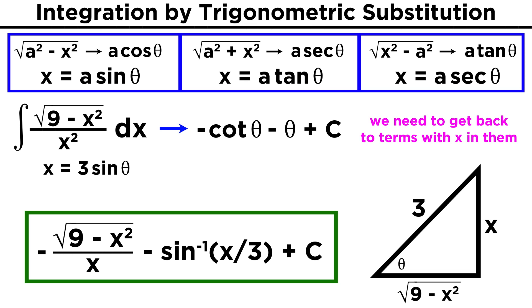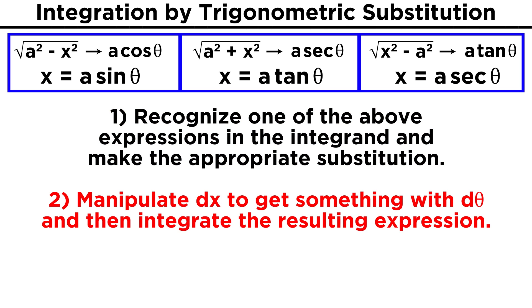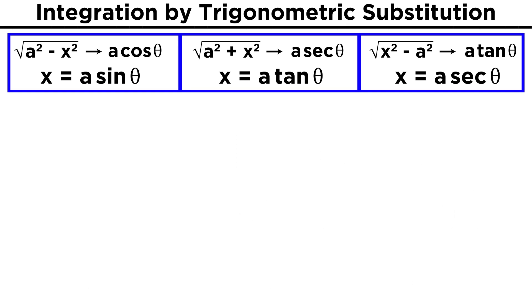So that may seem quite involved, but remember that we really just did three things. First, we recognized one of the three expressions that allow for trig substitution, and we made the substitution. Then we manipulated dx to get an expression with d theta in it, which allowed us to integrate by whatever means now possible. Then to get our answer back in terms of x, we constructed a triangle and labeled everything in terms of x. Don't worry, this will get easier over time. Let's try one more to help things sink in.